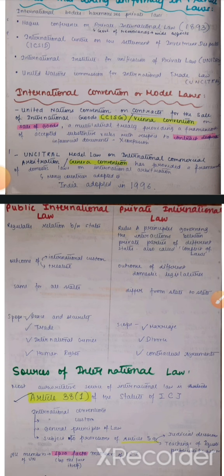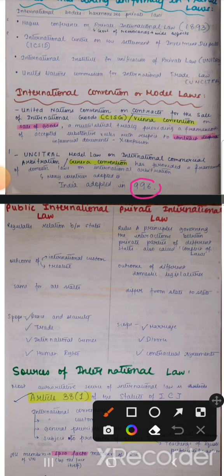After this we come to the Geneva Convention — the UNCITRAL Model Law on International Commercial Arbitration. You have studied this also in the arbitration chapter. It provides a framework of domestic laws on international arbitrations, and countries have to adopt it. In 1996, India adopted it — ye yaad rakhna, it's important for one-markers.